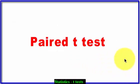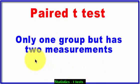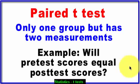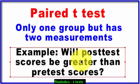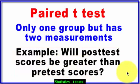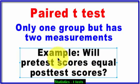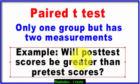Moving on to the paired t-test, also called a matched t-test or matched pairs t-test. The paired t-test has only one group but two measurements. The best example is a pre-test and a post-test. An algebra teacher gives a pre-test at the beginning of school and a post-test a semester later, and hopefully post-test scores show improvement over the pre-test. Since we're asking whether post-test scores will be greater than pre-test scores, that makes this a one-tailed test. If we weren't sure — just asking whether they're equal or not — it would be two-tailed.